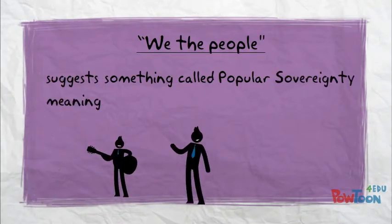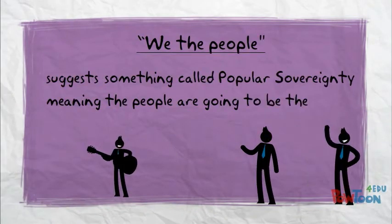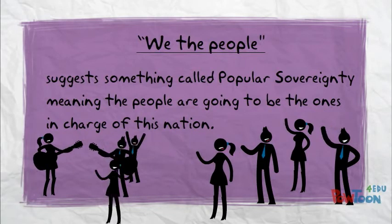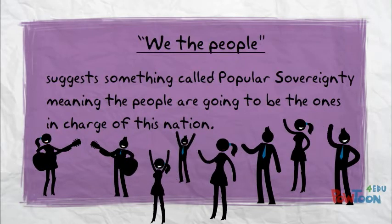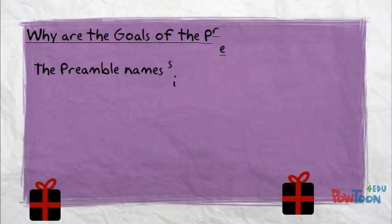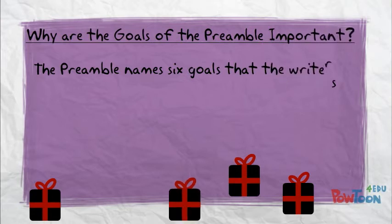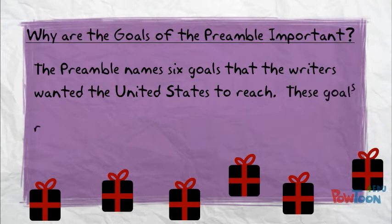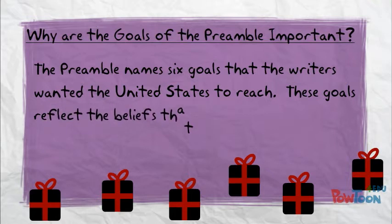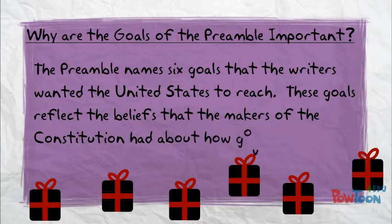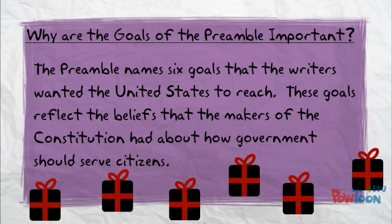"We the People" suggests something called popular sovereignty, meaning the people are going to be the ones in charge of this nation. The preamble names six goals that the writers wanted the United States to reach. These goals reflect the beliefs that the makers of the Constitution had about how government should serve the people.